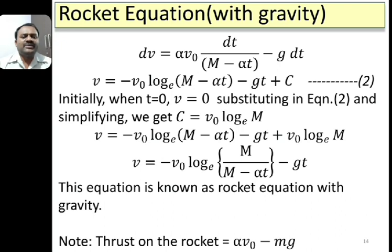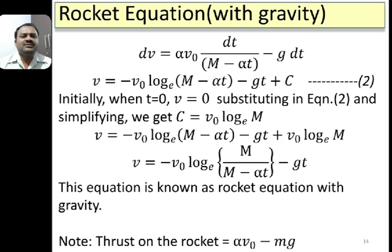Applying the initial condition t = 0, v = 0, we get C = v0 × ln(M). Substituting back: v = −v0 × ln(M − alpha×t) − g×t + v0 × ln(M), which simplifies to v = −v0 × ln(M / (M − alpha×t)) − g×t. This is the single stage rocket equation in the presence of gravity. The net thrust in this case is alpha×v0 − mg, where mg is the gravitational force pulling the rocket downward.